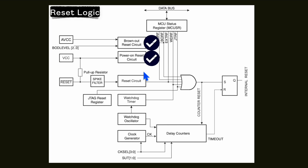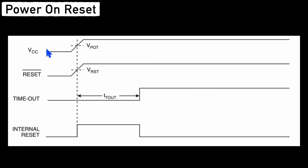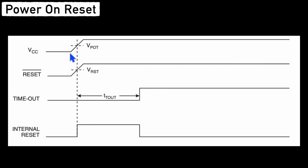Let's see about the power on reset. When you remove power from the circuit, the VCC line goes low. Upon power up, a reset has to be performed, and your microcontroller will be in the reset state until the timeout. After this timeout, it will again come to the normal state. This is a simple power on reset logic where reset is performed upon power on.